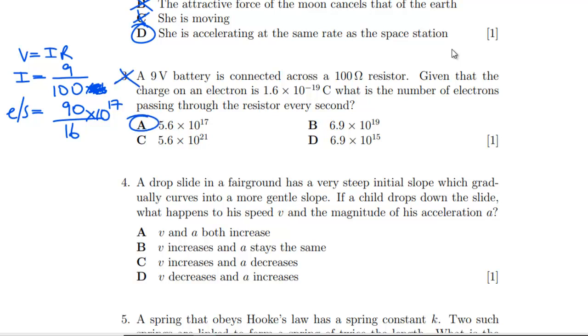Question four: a drop slide in a fairground has a very steep initial slope which gradually curves into a more gentle slope. If a child drops down the slide, what happens to his speed v and the magnitude of acceleration a? v will be increasing all the time because you're still doing GPE to kinetic energy. a is going to be decreasing because we're getting more of a reaction force from the slide. We need v increases and a decreases, which is C. This is looking good so far.